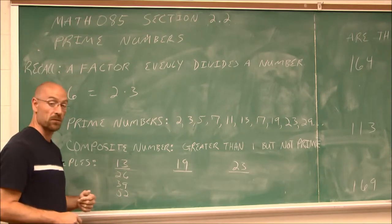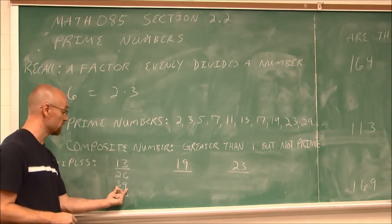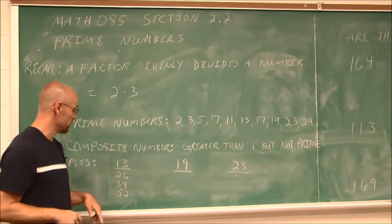Or we could use our divisibility rules. This one's divisible by 2. This one's divisible by 3, because the sum of the digits is divisible by 3. And we talked about that in the previous section.